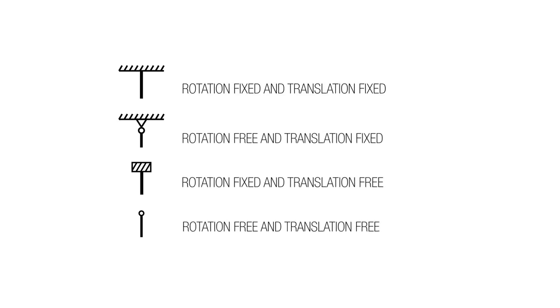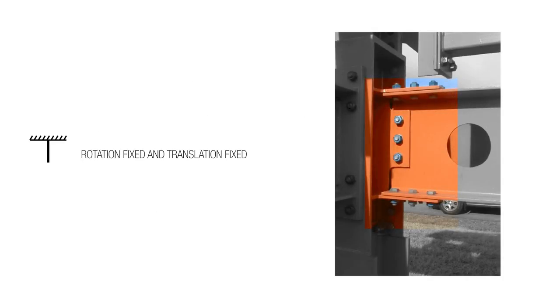So let's go through examples of what we mean by rotation fixed and translation fixed and so forth. So this is a moment connection. We saw this before when we talked about steel. You know it's a moment connection because we've engaged the flange and the web. And we're holding both of them in place. And so that would be a rotation fixed and translation fixed. It's not gonna slide up and down. It's not gonna rotate.